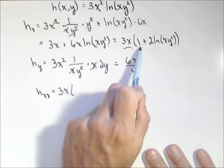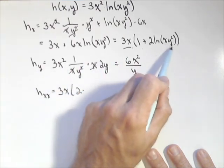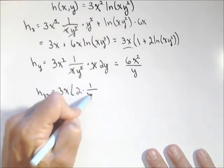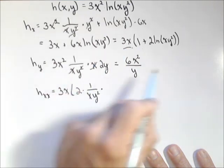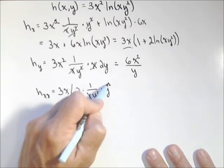Derivative of one is zero. Two times, now we're doing this one again with respect to x. So one over xy squared times the derivative of xy squared, which we saw before, is just y squared.